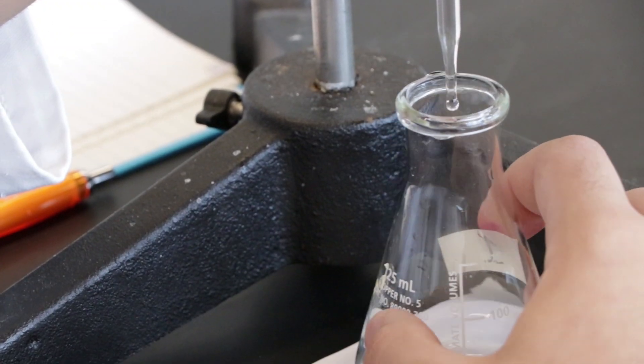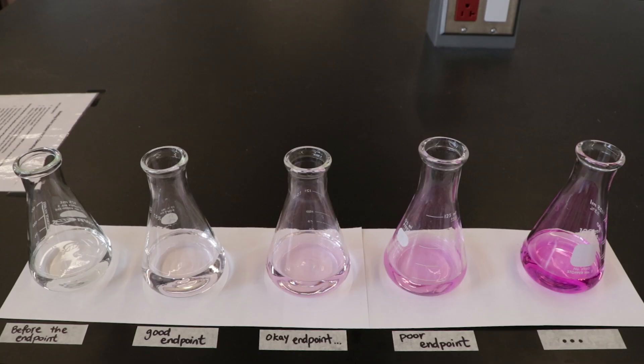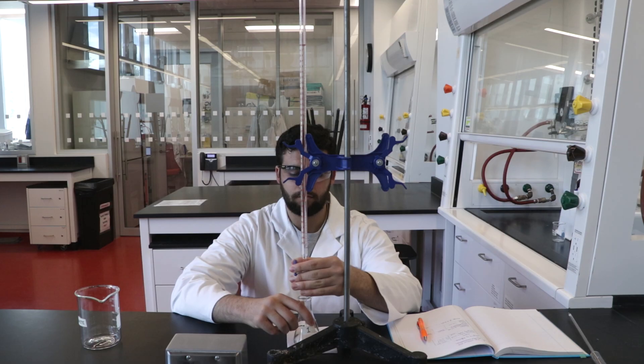As you add more sodium hydroxide beyond the endpoint, the solution will become more magenta. Here, the flask on the far left is before the endpoint. The second flask shows a good endpoint and the flask on the far right represents a poor endpoint. You should aim to achieve the palest pink color possible.